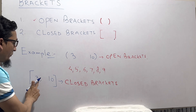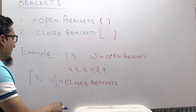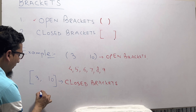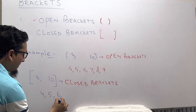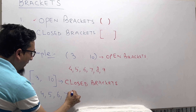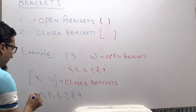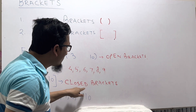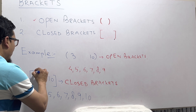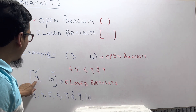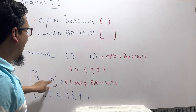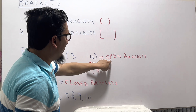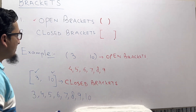The meaning of the closed bracket is: we will take all the numbers from 3 to 10, and we will also include 3 and 10. So the numbers are 4, 5, 6, 7, 8, 9, as well as 3 and 10 both. Whenever we use the closed bracket, you have to include both endpoints and all the numbers in between. This is the difference between the open bracket and the closed bracket.